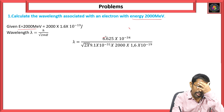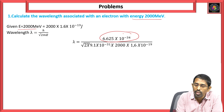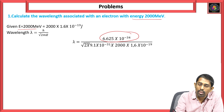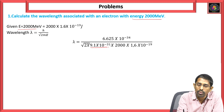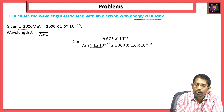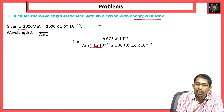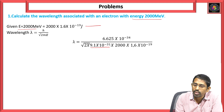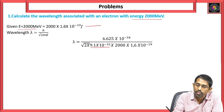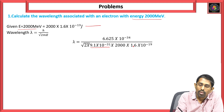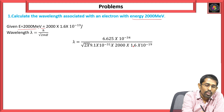Planck's constant h = 6.625 × 10⁻³⁴ joules. The mass of an electron m = 9.1 × 10⁻³¹ kg. The energy of the electron is 200 × 1.6 × 10⁻¹⁹ joules. We are substituting here all the values and simplifying.